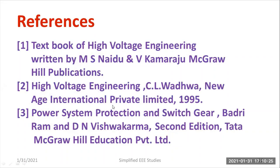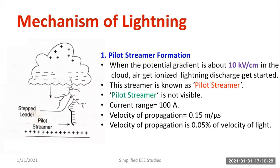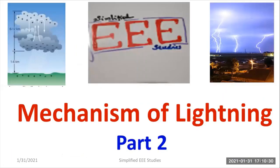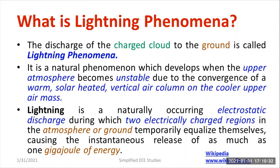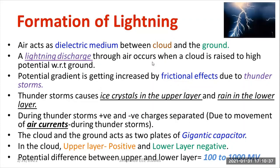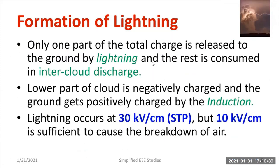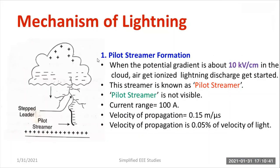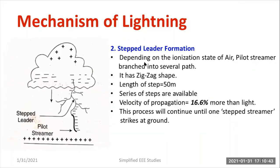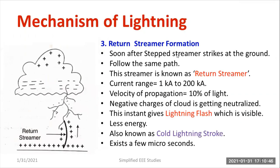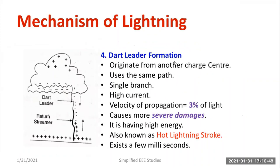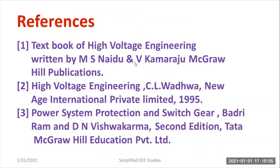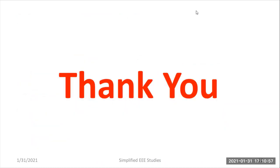In conclusion, I first covered the basics of the lightning phenomenon from the previous session, then explained the four mechanisms: pilot streamer formation, stepped leader formation, return streamer formation, and dart leader formation. From this we understand that the dart leader is the most severe, causing the most damage. Thanks for watching this video.